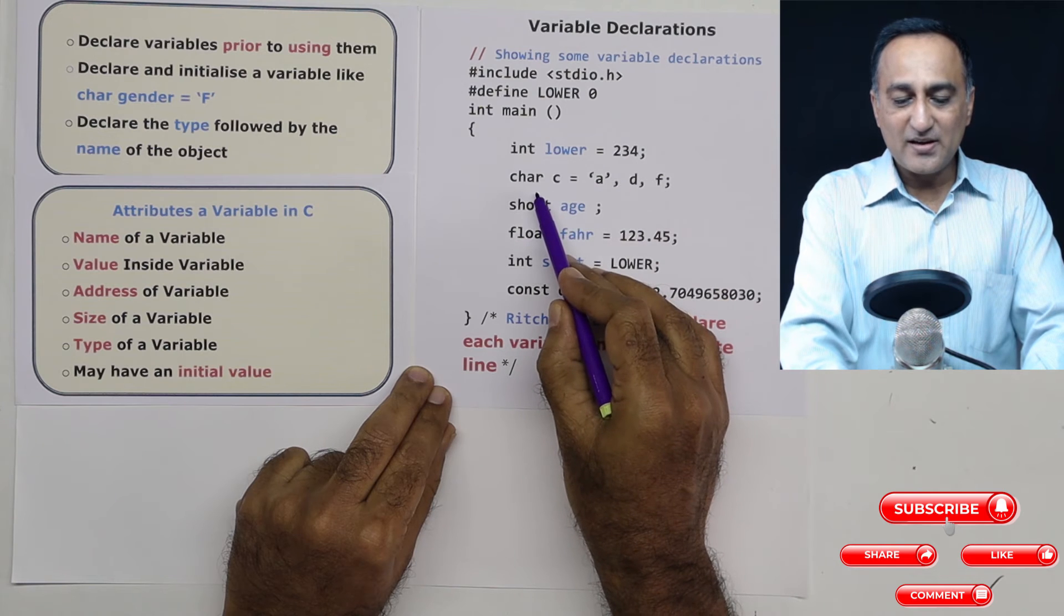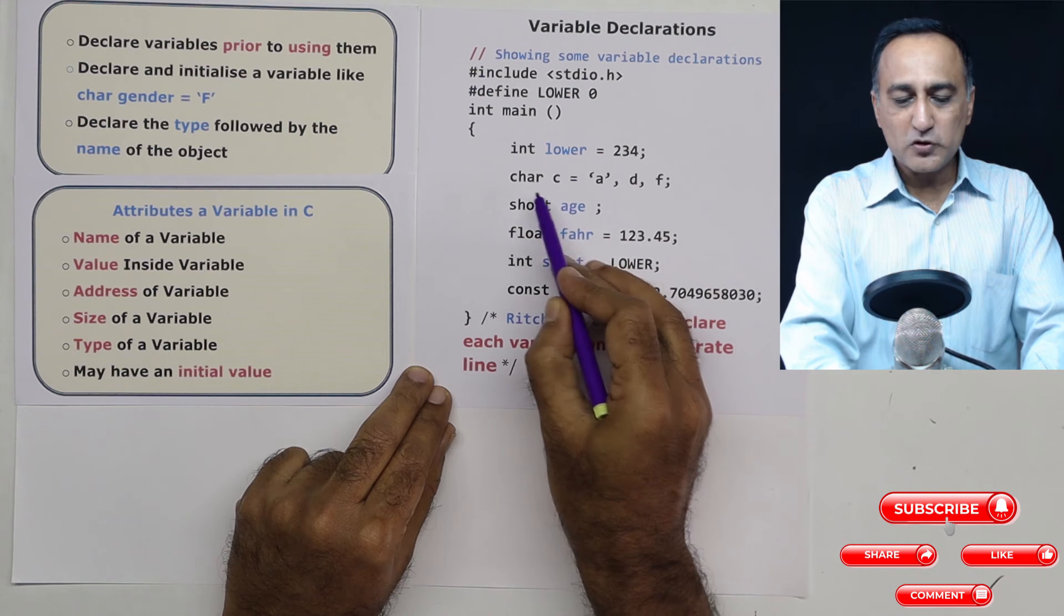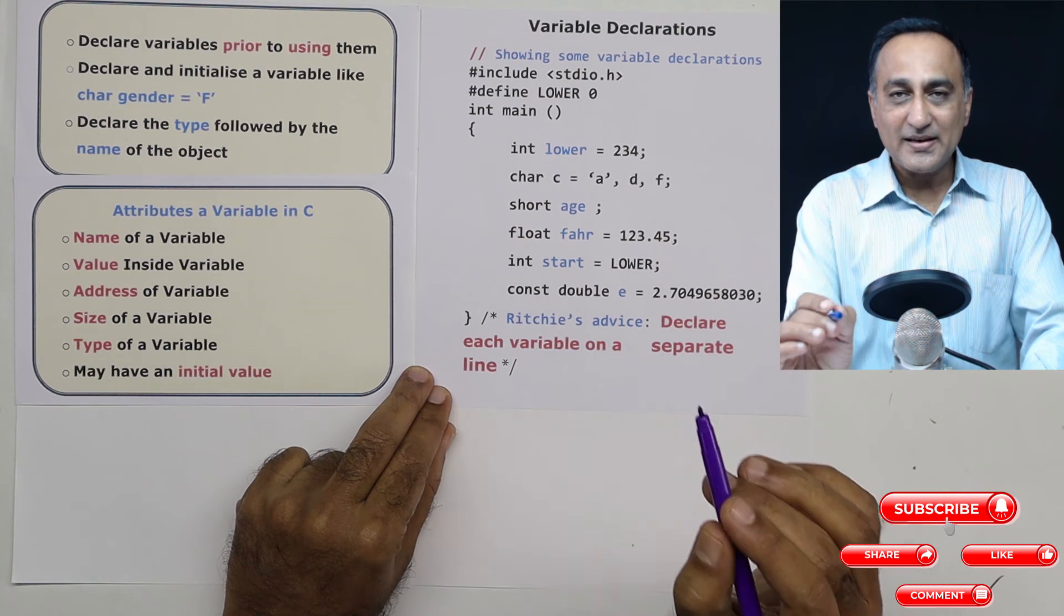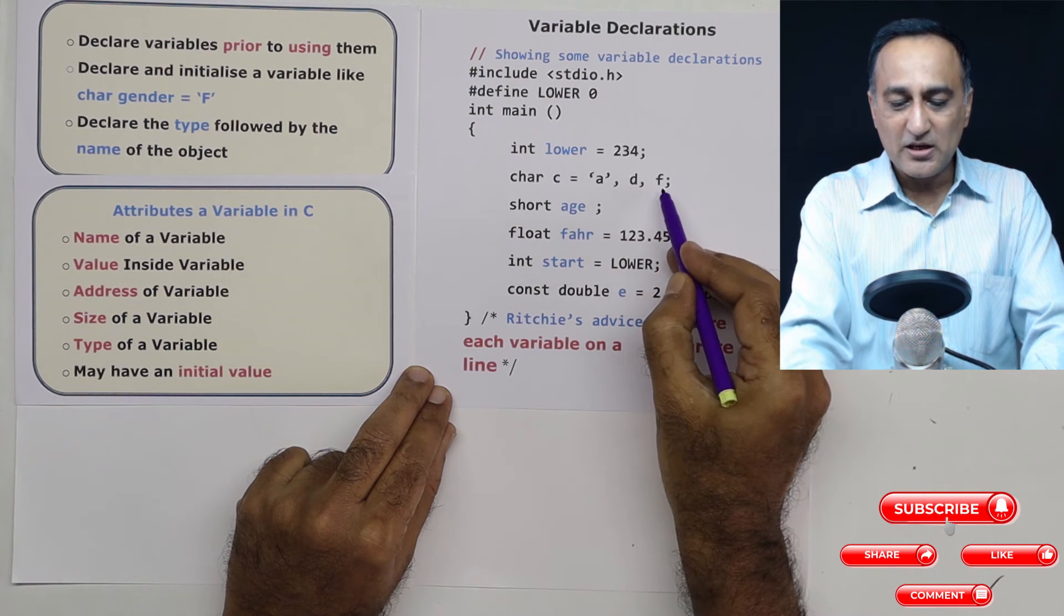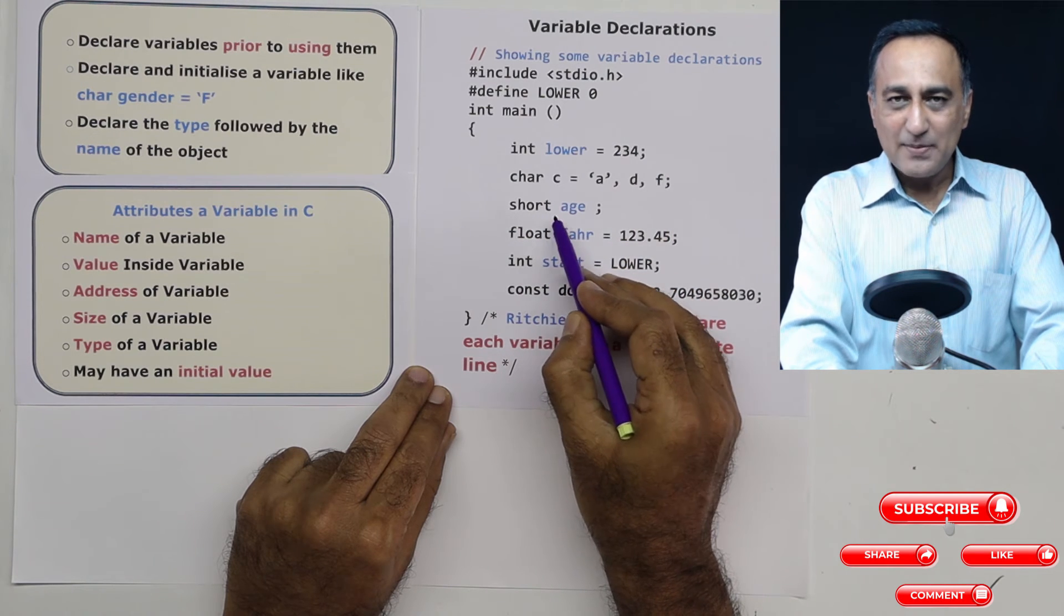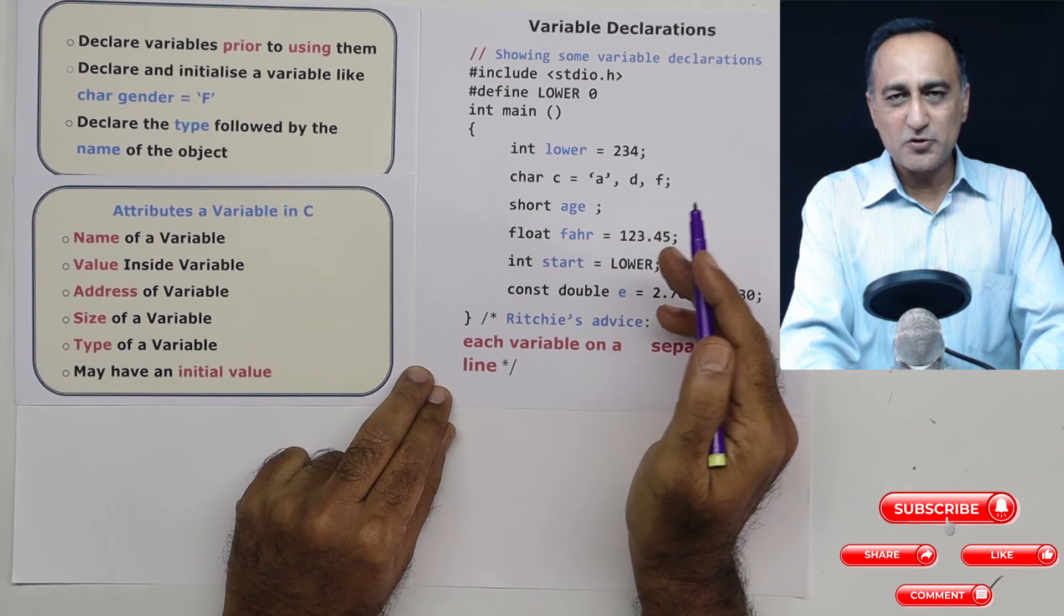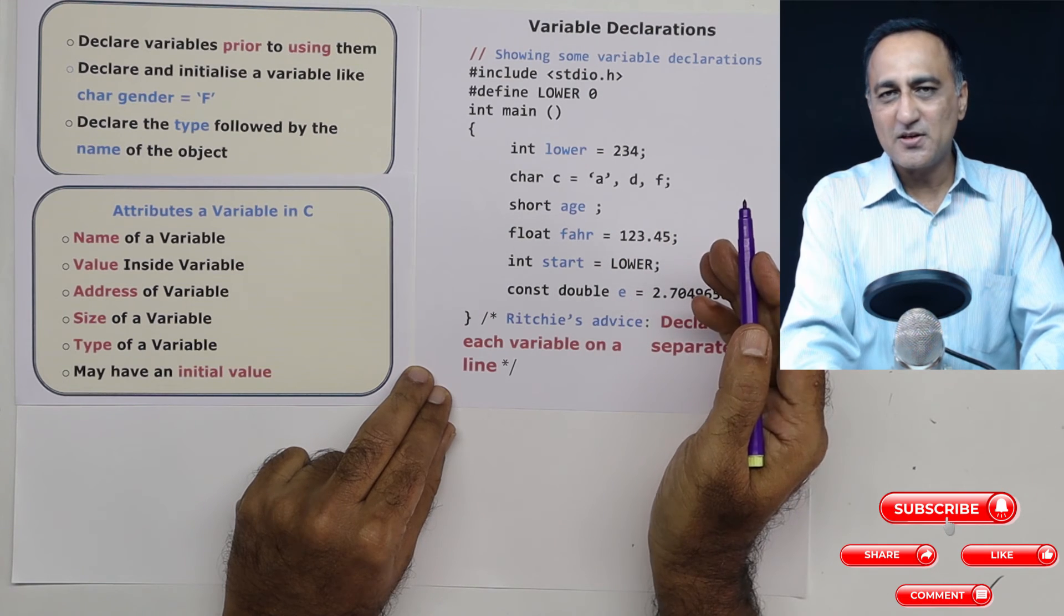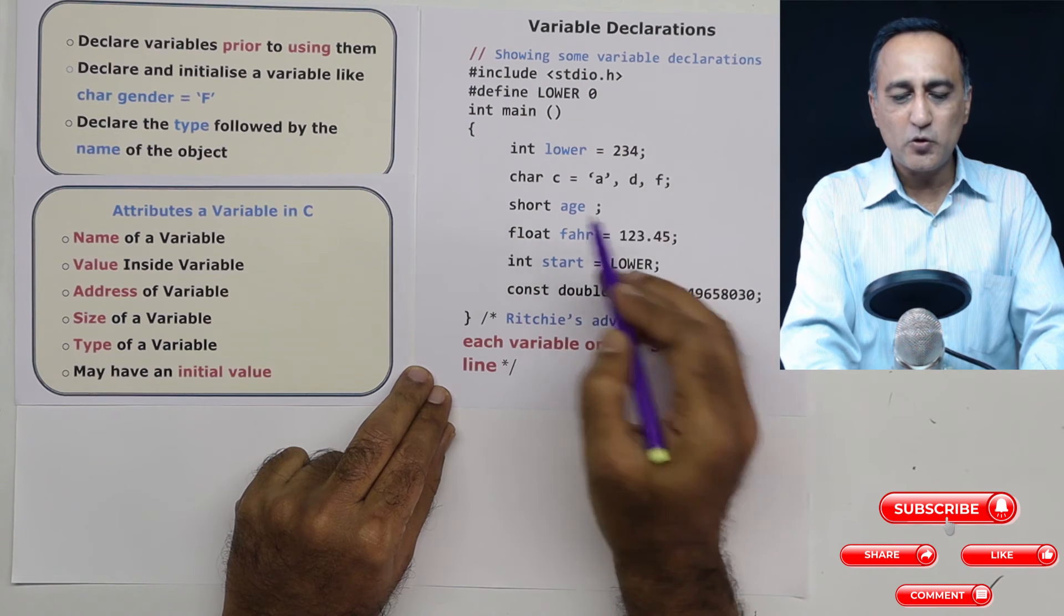I have declared a variable C of the type character with the initial value A. D and F are also character type of variables, but they contain garbage or random initial values because I have not given them any initial values. Now short is a type of integer, which is roughly half of your standard integer.